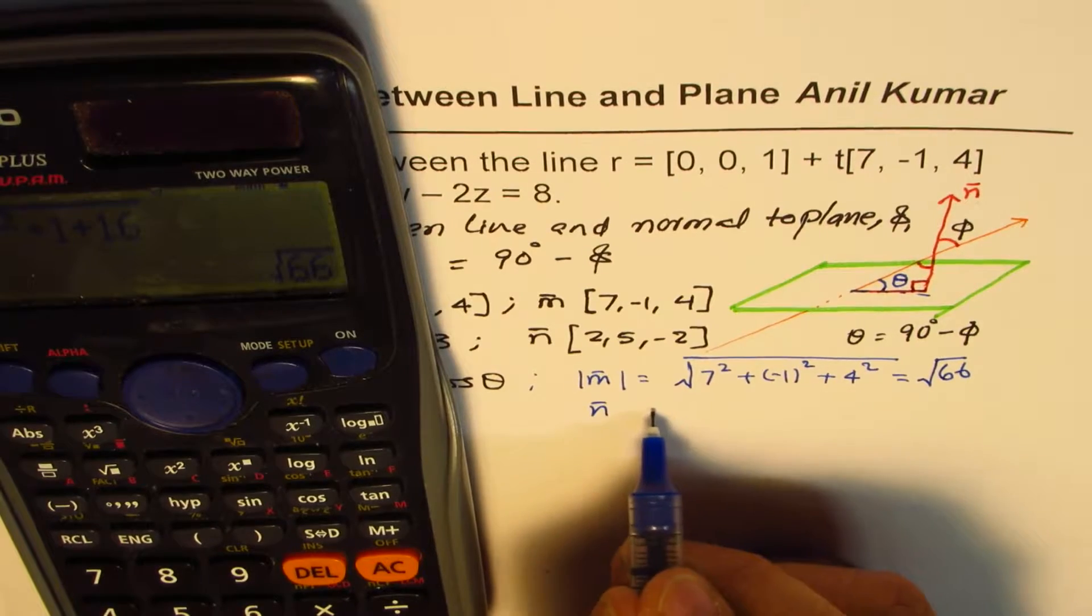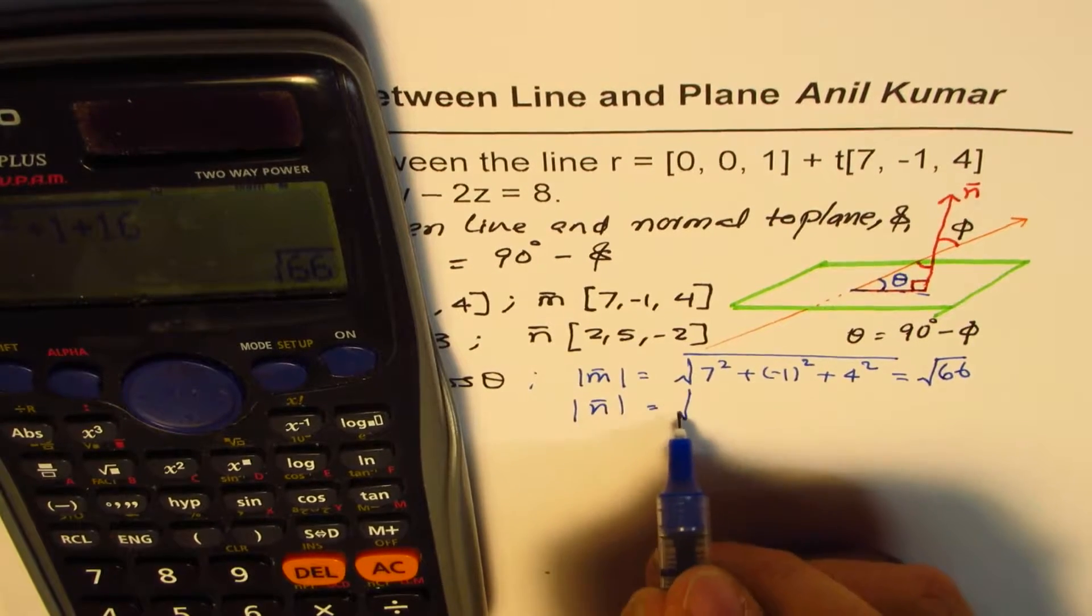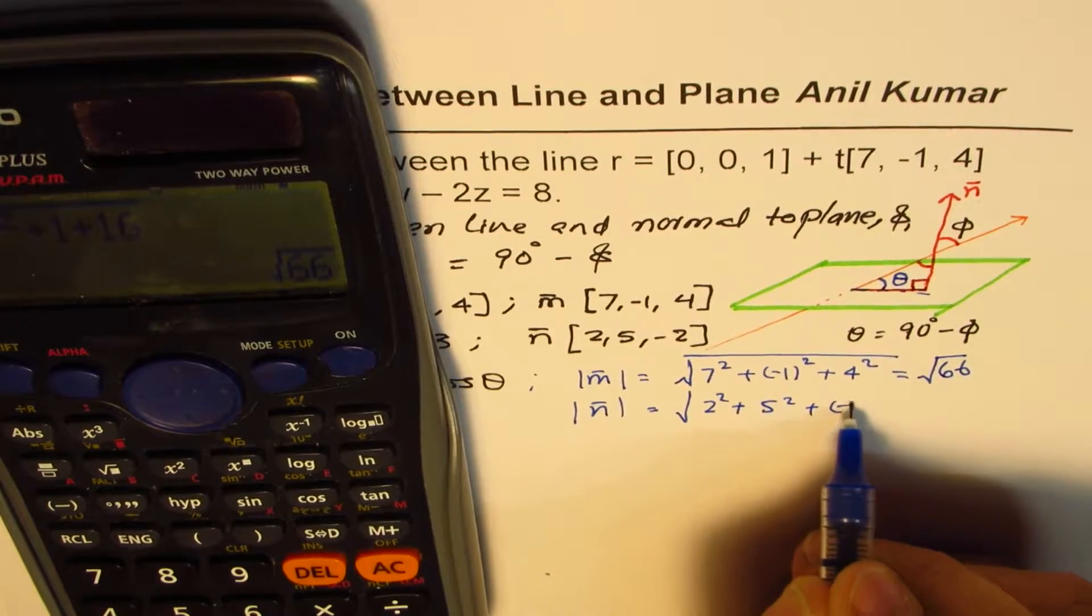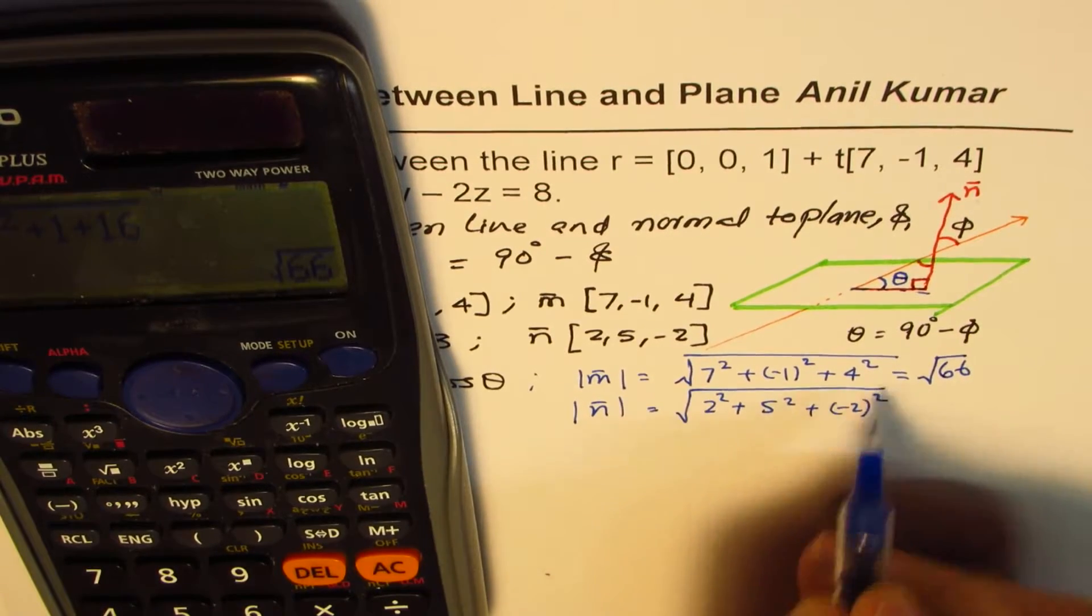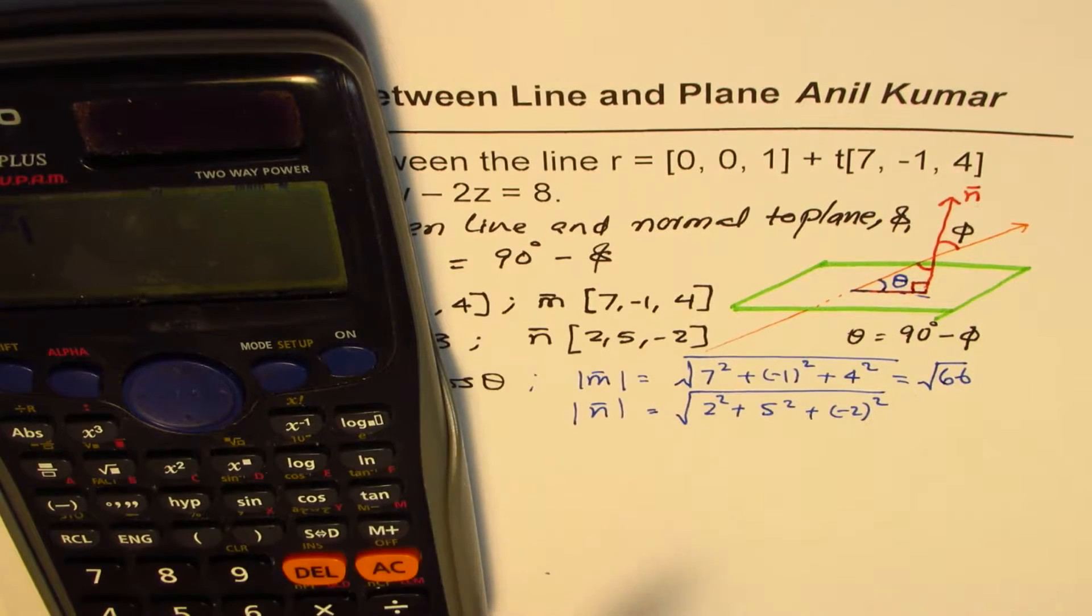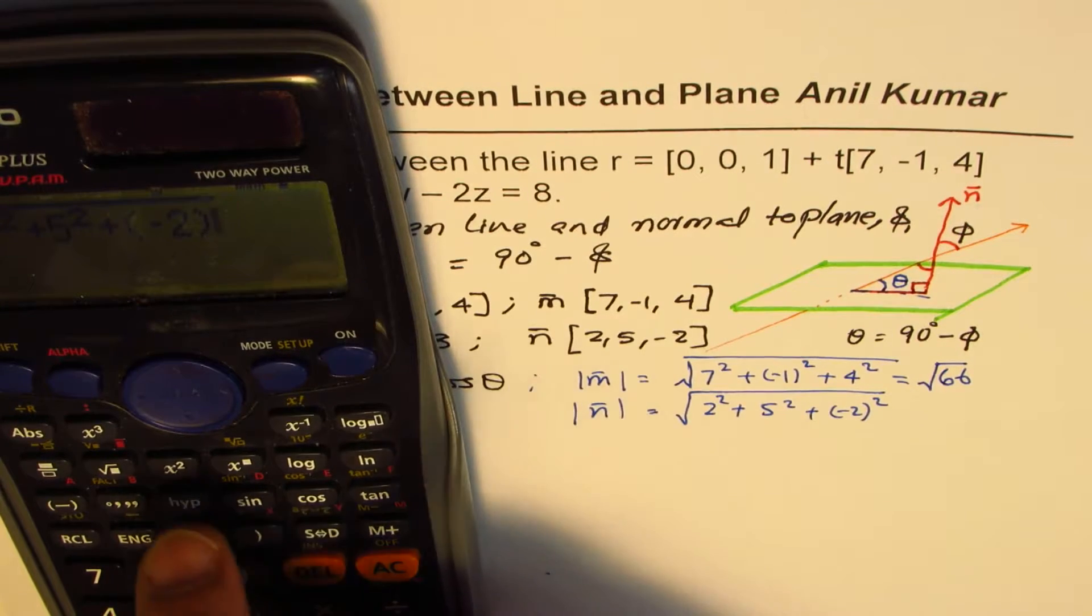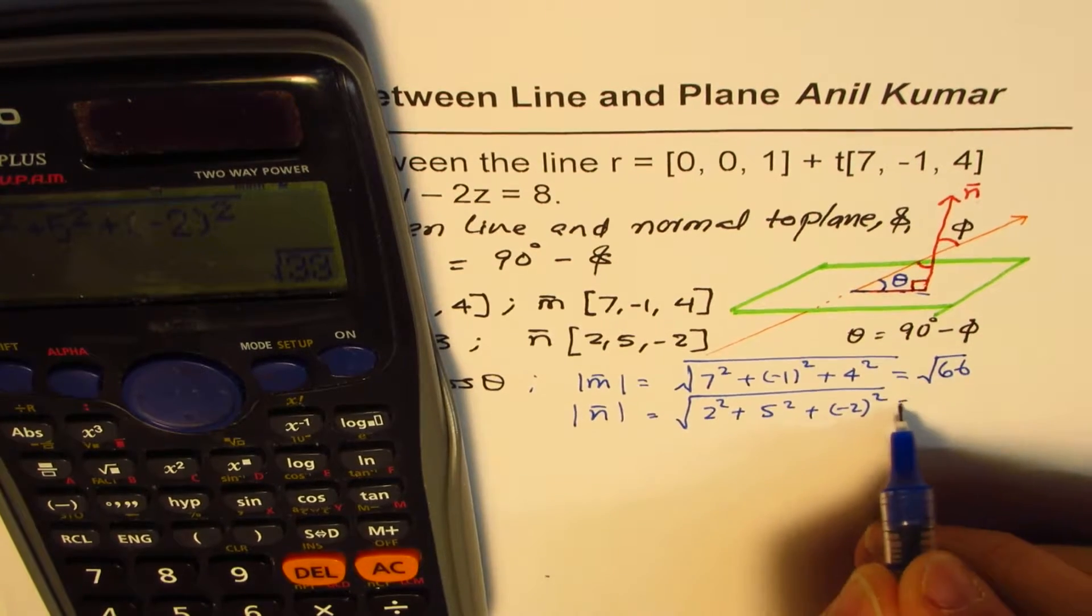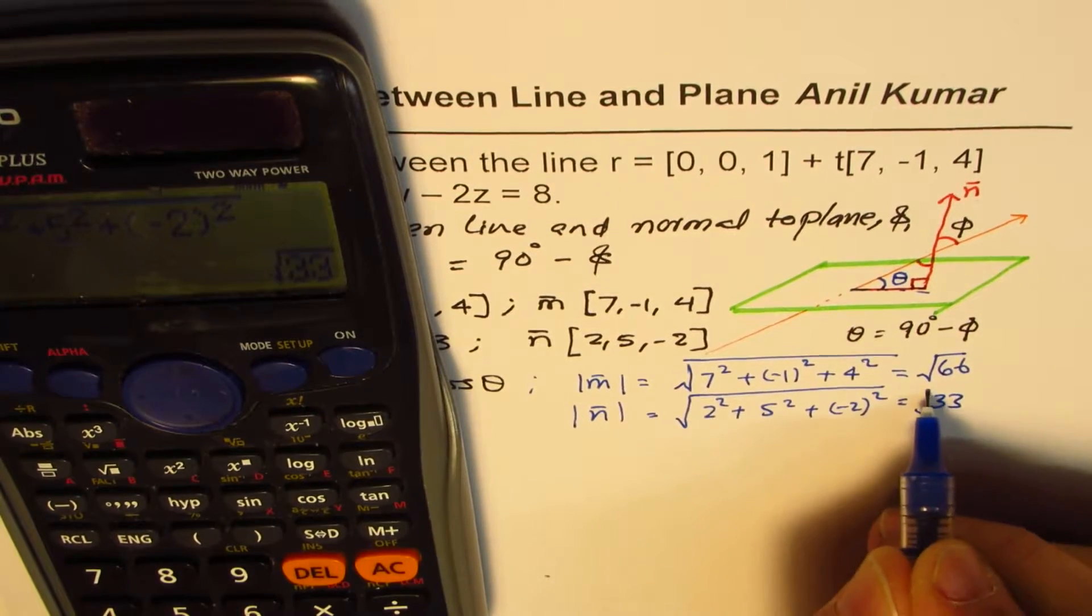And as far as N is concerned, its magnitude is square root of 2² + 5² + (-2)². So that is square root of 4 + 25 + 4, which is square root of 33.